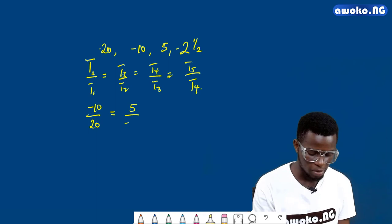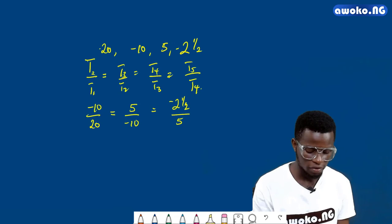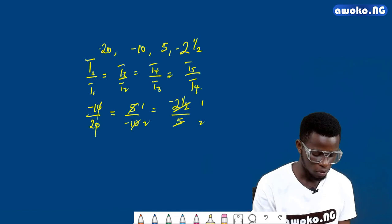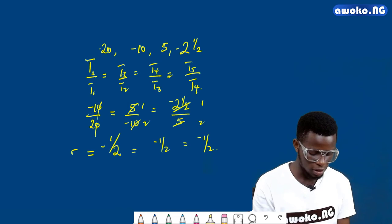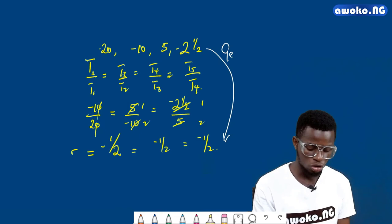So we have minus 10 over 20, which equals 5 over minus 10, which equals minus 2 and a half over 5. Solving these, each equals minus 1 over 2. This is also equal to minus 1 over 2, and this is also equal to minus 1 over 2. So we can conclude that this particular sequence is a geometric sequence or progression.